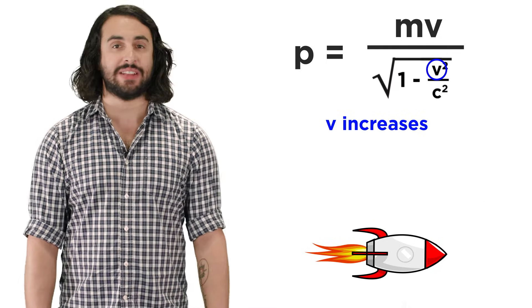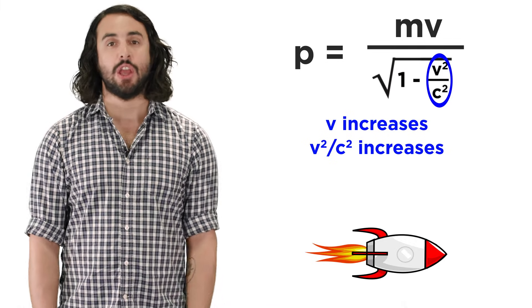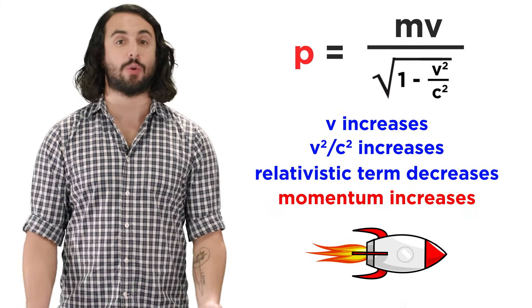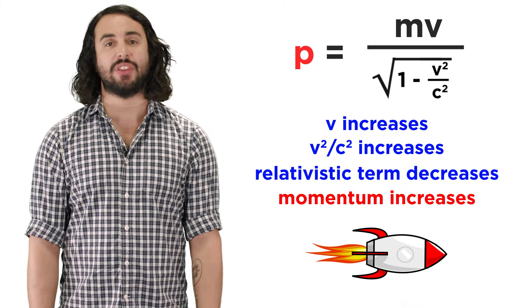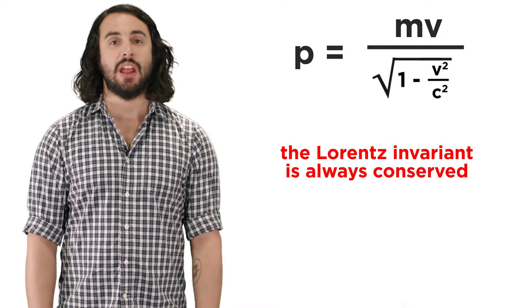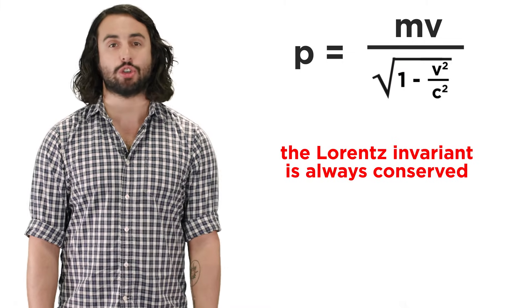As velocity increases, this term increases, which makes this term decrease, and momentum will increase overall. It is the square of this relativistic momentum, known as a Lorentz invariant, that is conserved in all inertial reference frames.